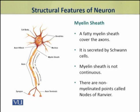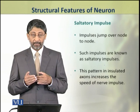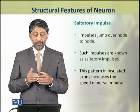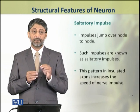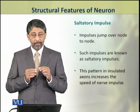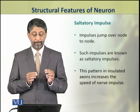Some axons have a layer of fatty material over them which is called the myelin sheath. Generally, the myelin sheath is produced by Schwann cells. This myelin sheath is not continuous; rather it has small non-myelinated points which are called nodes of Ranvier. Due to these nodes of Ranvier, the nerve impulse moves in a jumping pattern from one node to the other. Such conduction of impulse is called saltatory conduction, and such impulses are called saltatory impulses. This pattern found in myelinated neurons increases the speed of nerve impulse.